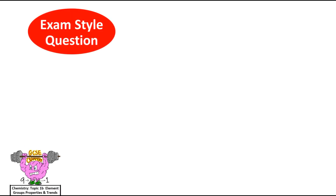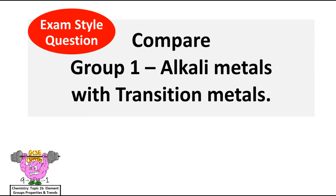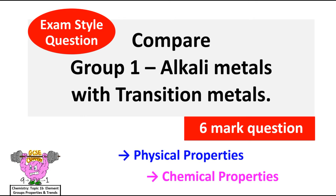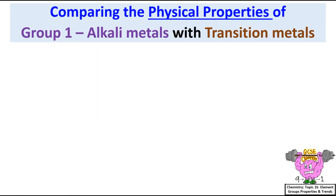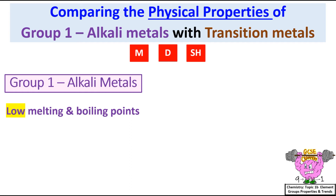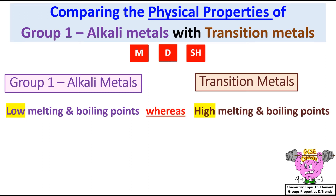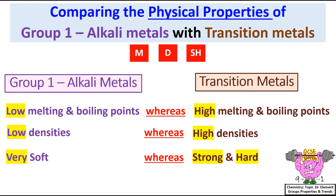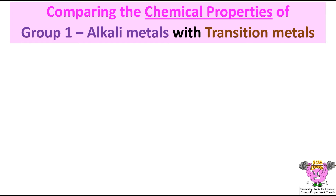Exam style question: Compare Group 1 alkali metals with transition metals. This is usually a 6-mark question, so you'll need to compare both physical and chemical properties to get all the marks. Using the acronym MDSH or MY DAD'S SHOCKING: Group 1 alkali metals have low melting and boiling points, whereas transition metals have high melting and boiling points. Group 1 alkali metals have low densities, whereas transition metals have high densities. Group 1 alkali metals are very soft, whereas transition metals are strong and hard.